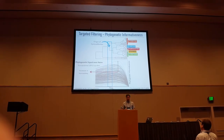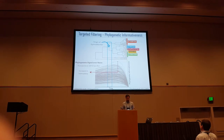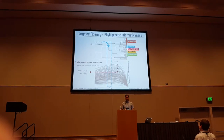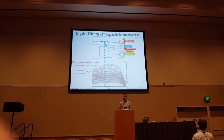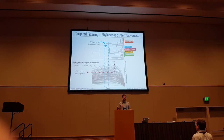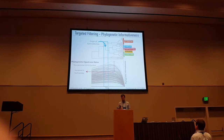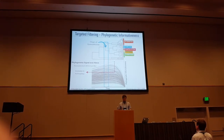However, phylogenetic informativeness doesn't take into account homoplasy. So on top of that, I calculated the probability of each locus to resolve the polytomy by taking into account the phylogenetic signal and not the noise.